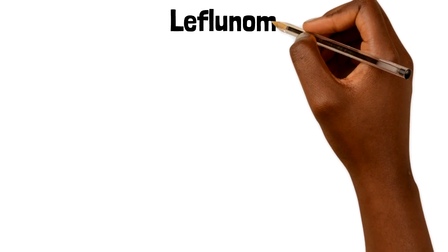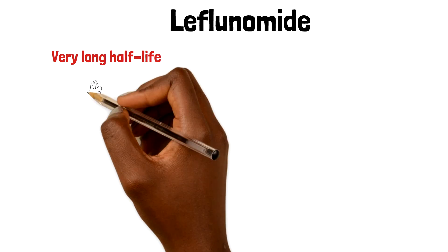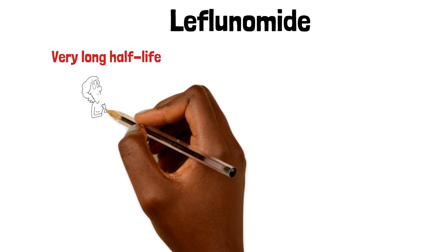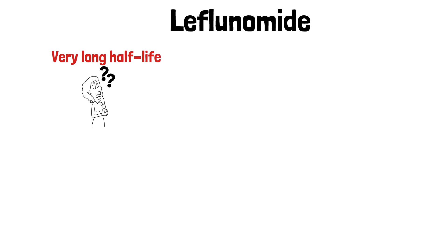Moving on to leflunomide, this is mainly used for management of rheumatoid arthritis and psoriatic arthritis. The one key phrase to remember about this medication is that it has a very long half-life. Knowing this makes it a lot easier to remember important side effects, mainly by thinking about what can occur if a drug is left in the body for too long. With this line of thinking, we can easily remember that one of the implications of this medication with a very long half-life relates to its risk of teratogenicity.